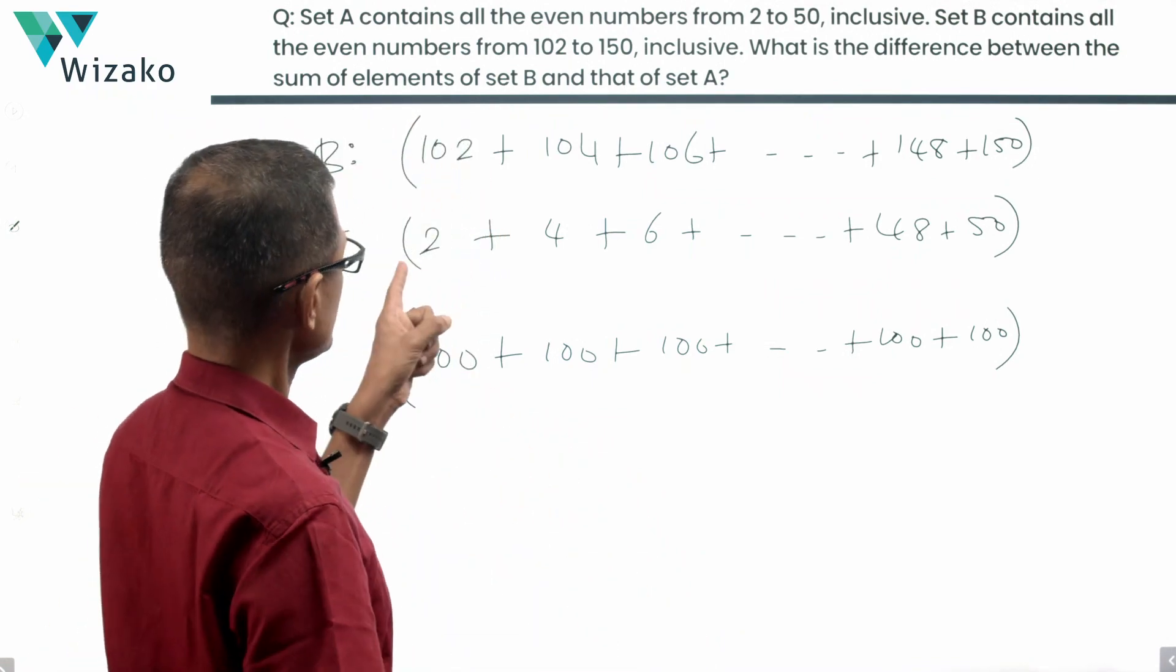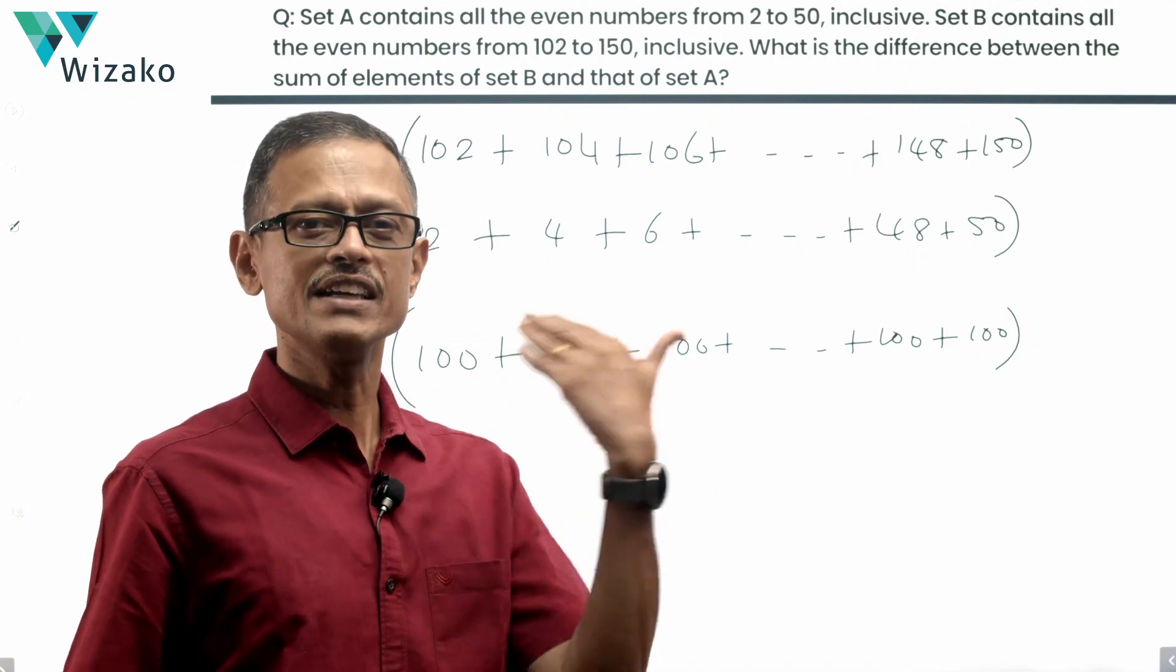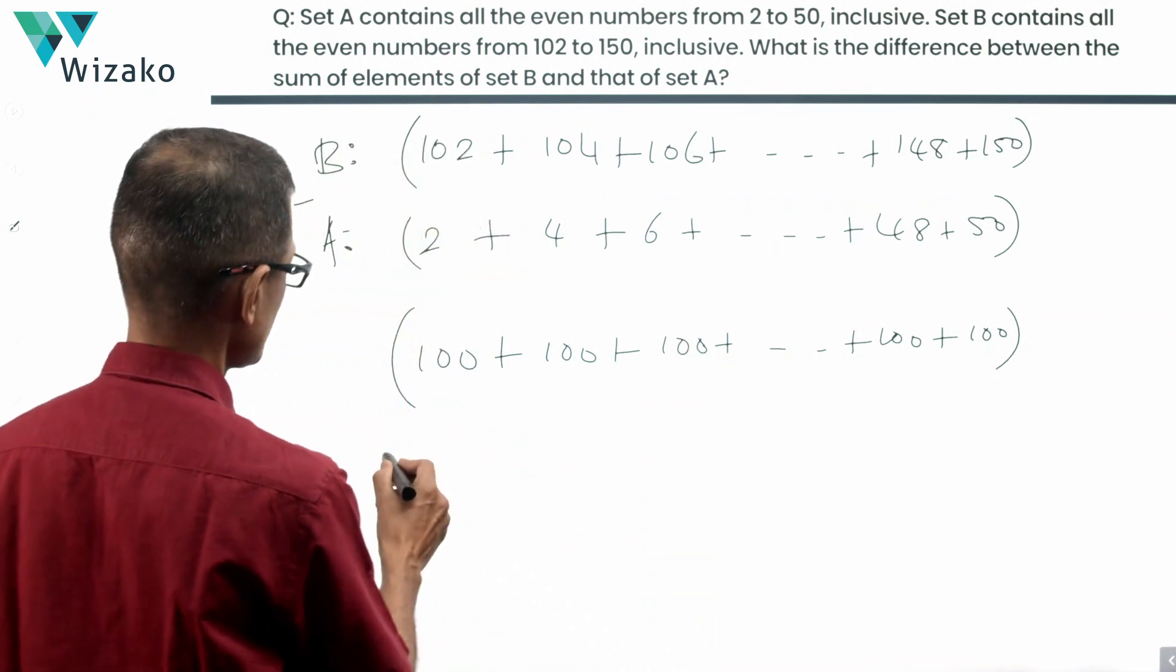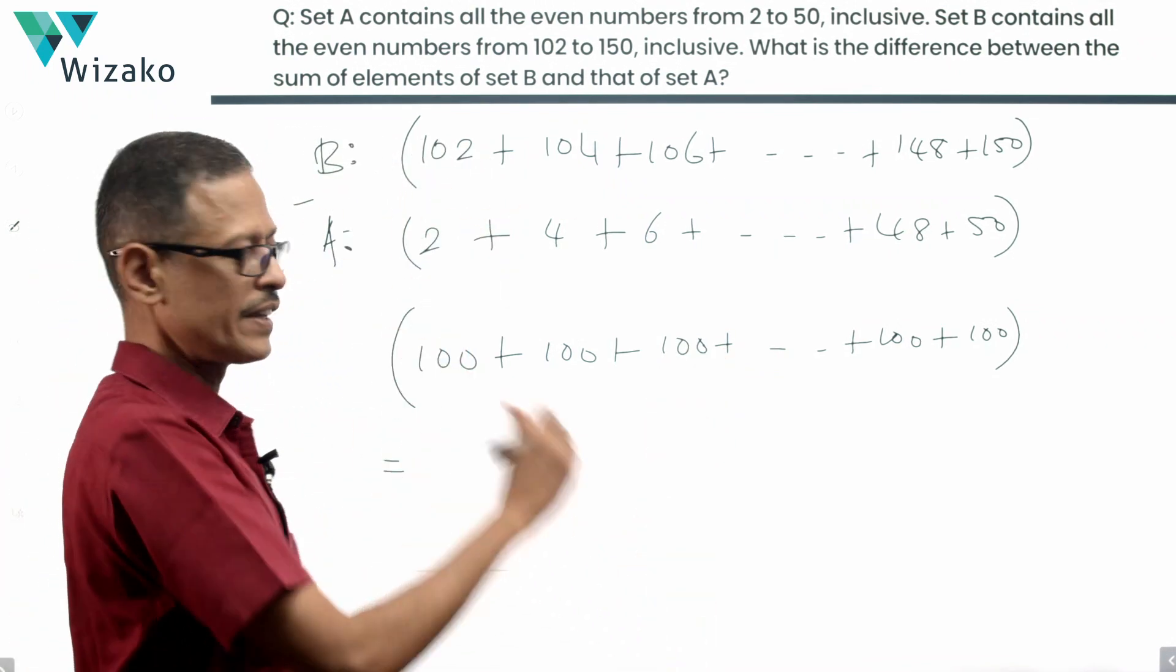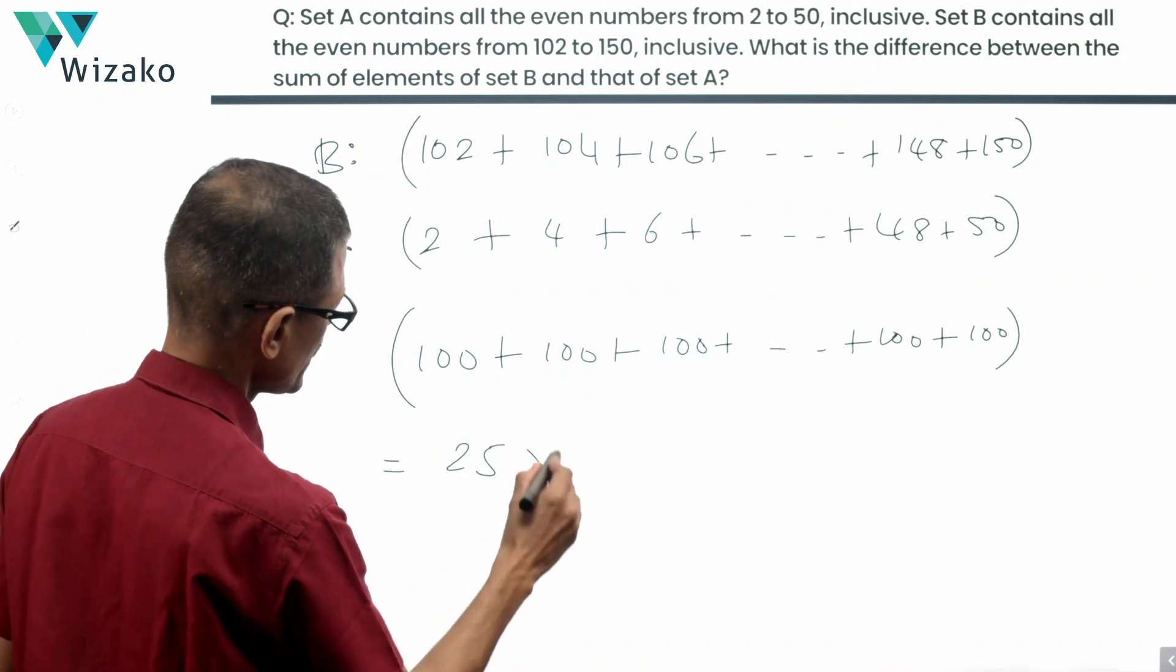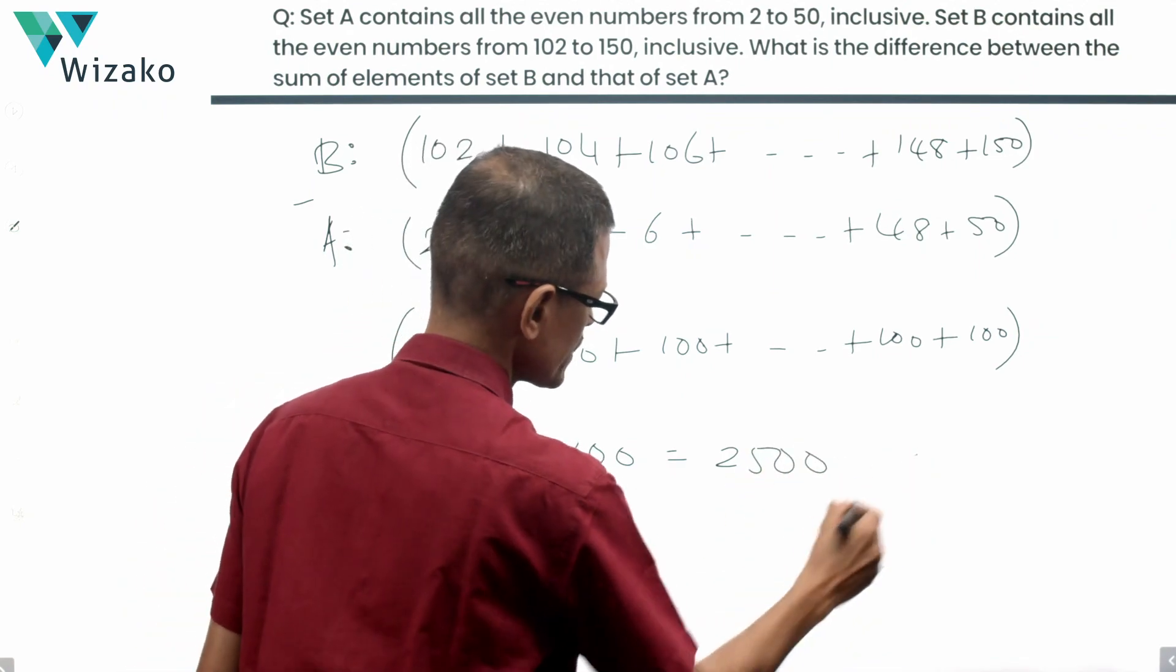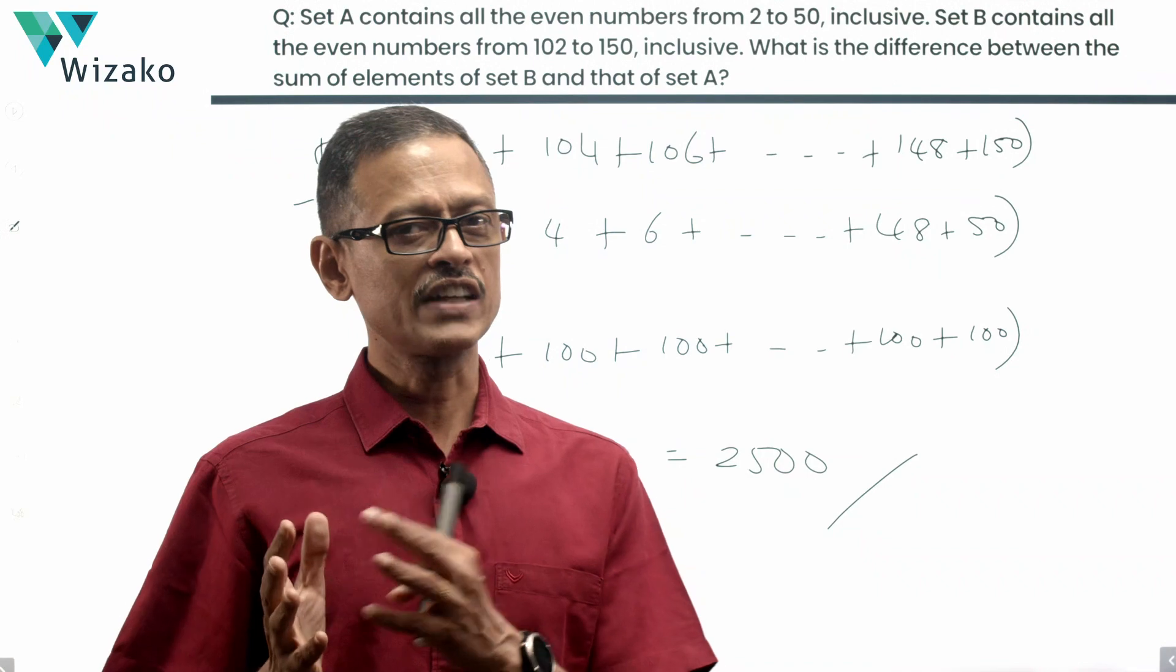How many terms are there? We are talking from 2 to 50 even numbers. There will be 25 even numbers between 2 and 50. So there are 25 such differences. The final answer: the difference between the sum of the elements of B and the sum of the elements of A is equal to 25 terms into the difference between each of the terms which is 100. So the answer is equal to 2500. This is the quickest way of solving this question. If you visualize it this way, it becomes a 550 level question.